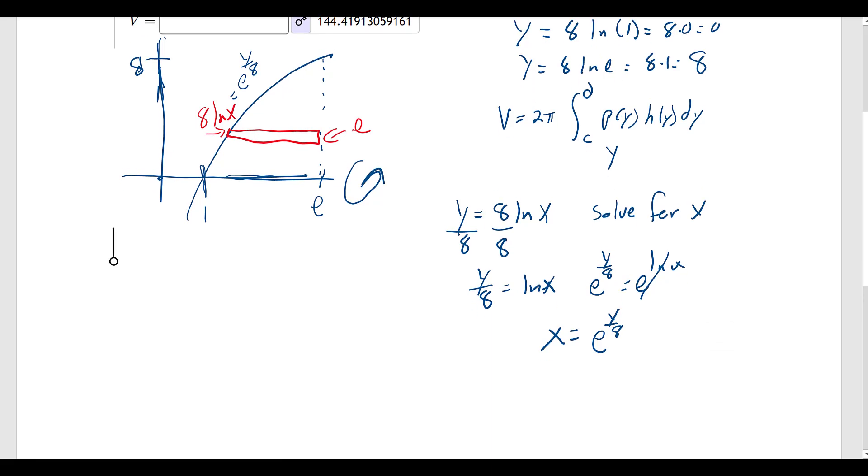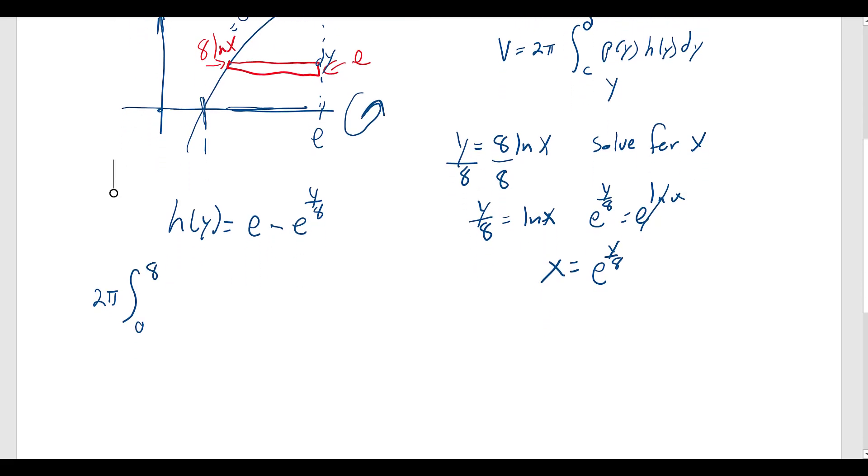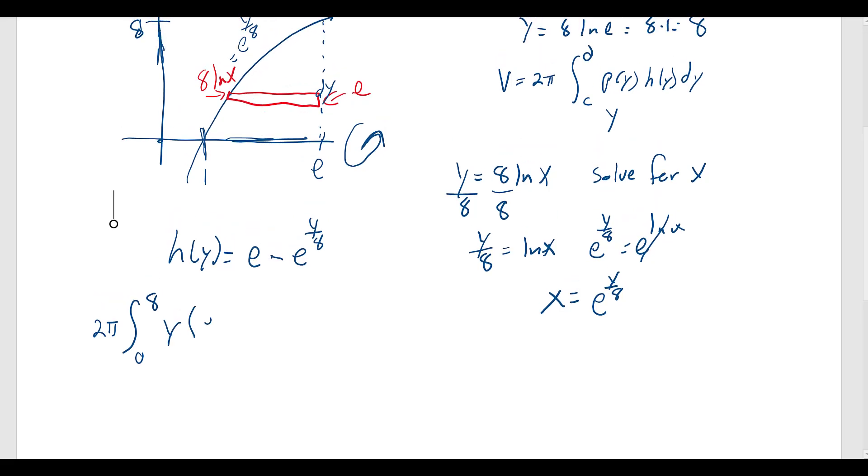So now we come up with our h(y). That's going to be e on the high end minus e to the y divided by 8. And then the width is going to be dy or delta y. So we have our integral, 2π times the integral from 0 to 8 of y times e minus e to the y divided by 8 dy. And there's our integral setup.